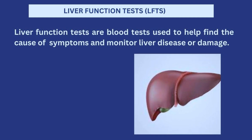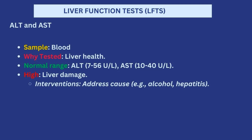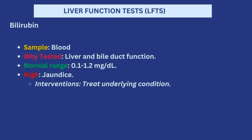Another test commonly heard in the hospital is liver function tests, popularly called LFTs — blood tests used to find out causes of symptoms or monitor liver disease or damage. Two common things under these tests: first, ALT and AST, which are tested to know liver health. The ALT should be about 7 to 56, and the AST should be about 10 to 40. Once these levels are higher than normal, that indicates liver damage — it could be due to excessive alcohol intake, liver inflammation, or anything affecting the liver. You have to treat the underlying cause.